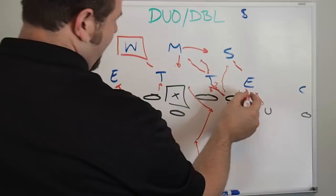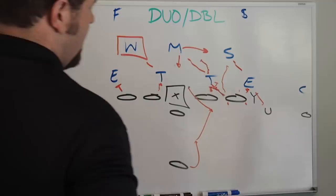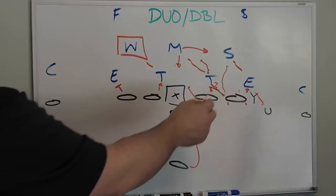On duo you can't hide the tight end. The tight end's got to block this guy because the play can't hit right here. He's got to be able to block him with the U. And so that's the difference in just a personnel thing with these two guys.